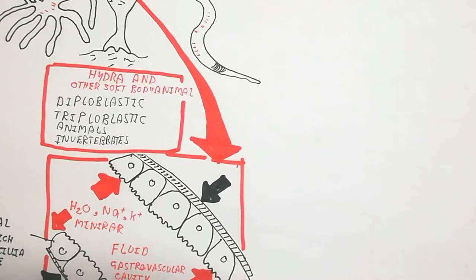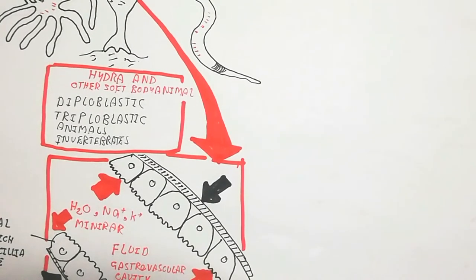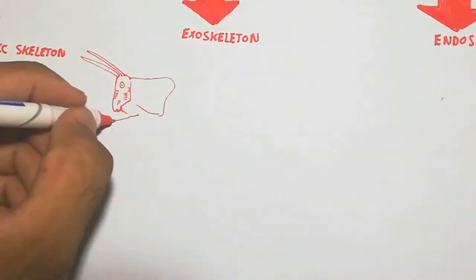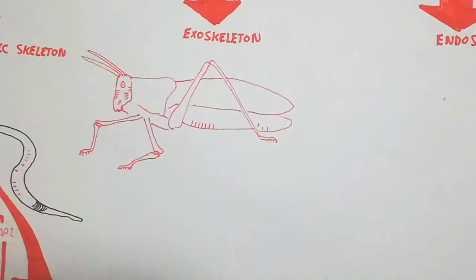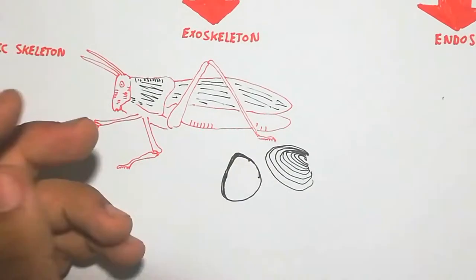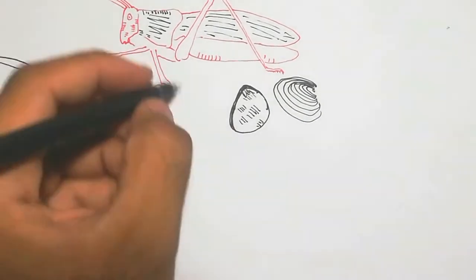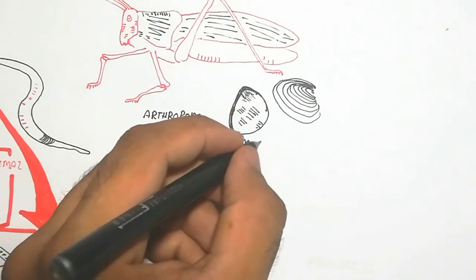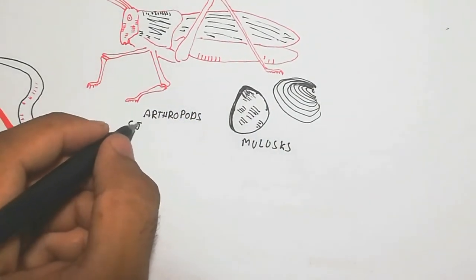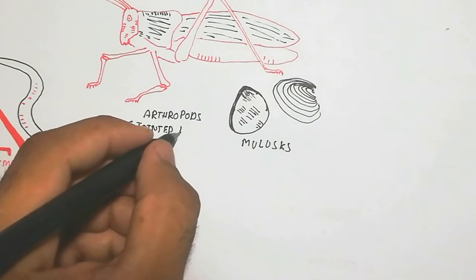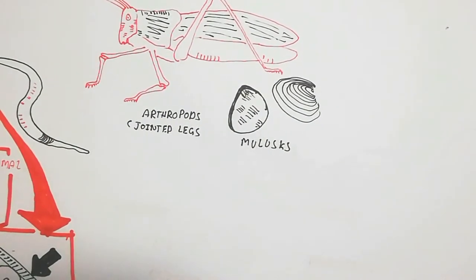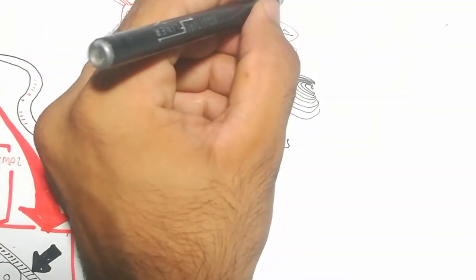The exoskeleton is the skeleton that surrounds the animal — the whole body is covered by the exoskeleton for movement and support. Arthropods, which have jointed legs, are one example. Mollusks have a shell made up of calcium carbonate deposition, which is another example of an exoskeleton.